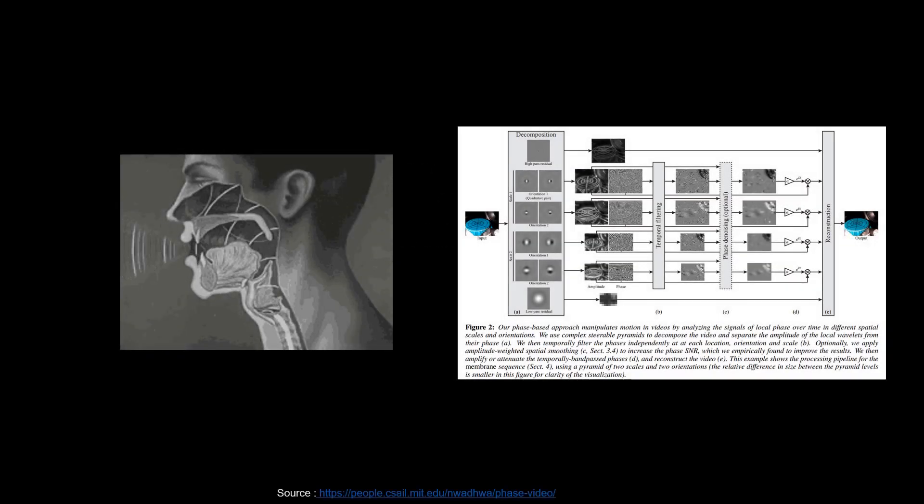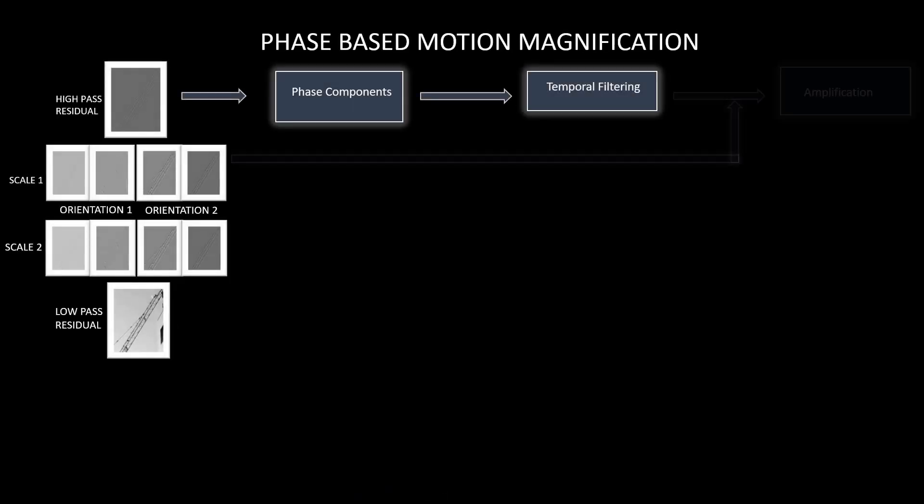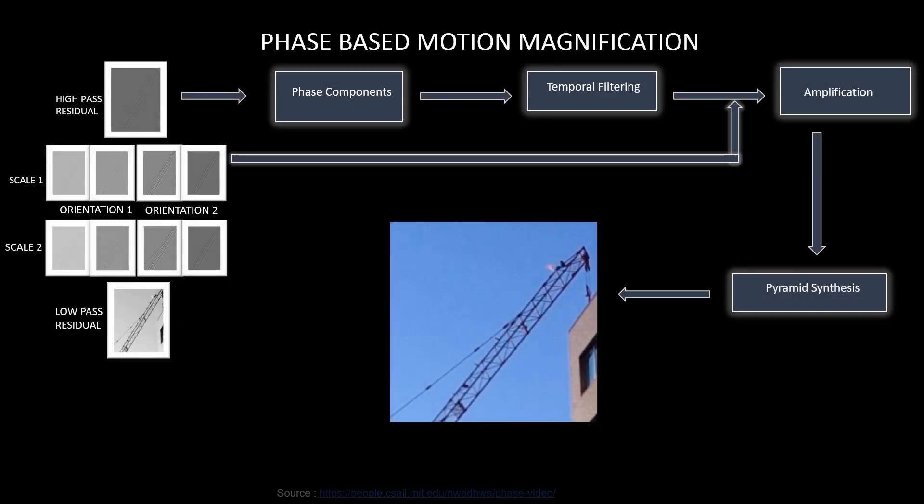In this second illustration, we study the use of phase-based motion magnification for throat analysis. It is well known from literature that the oscillation of larynx is vital in modeling the speech signal. This oscillation induces subtle motion variations on the throat. To observe this phenomenon, we utilize the phase-based motion magnification technique. The algorithm involves analyzing local phase signals over time at various spatial scales and orientations. This is accomplished through the use of complex steerable pyramids.